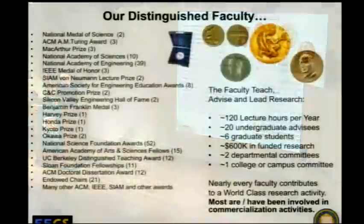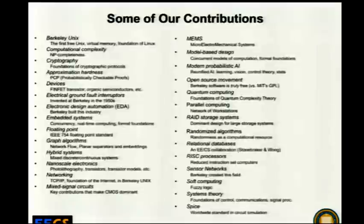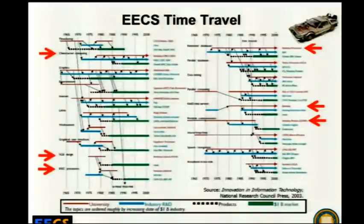Our faculty is extremely distinguished, but what I'd like to highlight is that almost all of us — myself included — have been involved in entrepreneurship. We've started companies, some quite successful. I want to spend a few minutes on this slide showing a study on the transition from university work to billion-dollar companies. The red line is university research, the blue line is industrial R&D, and the green line represents billion-dollar industries.